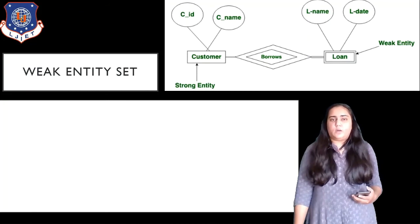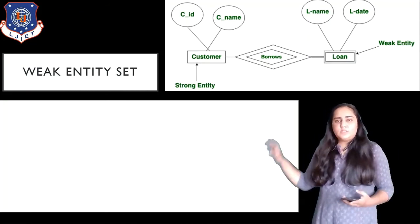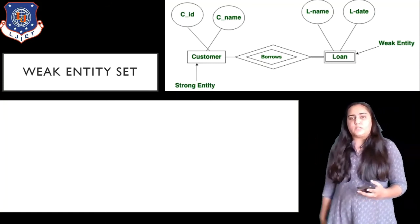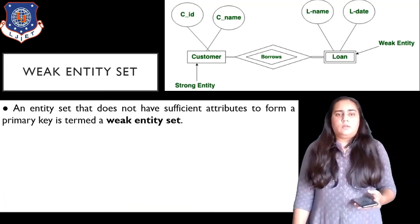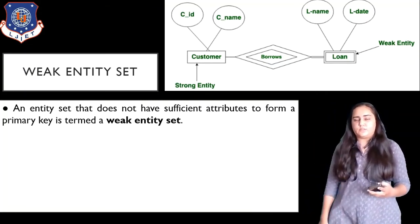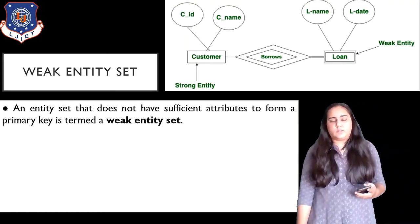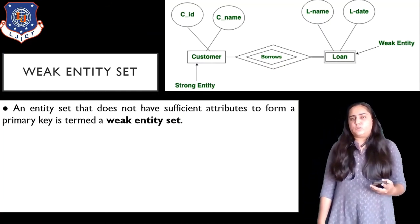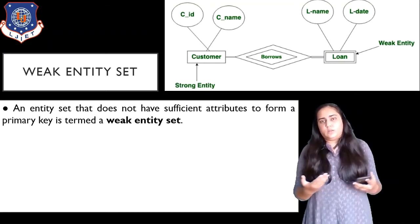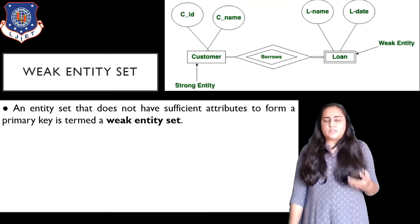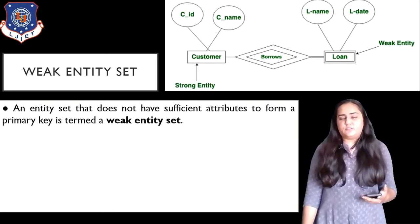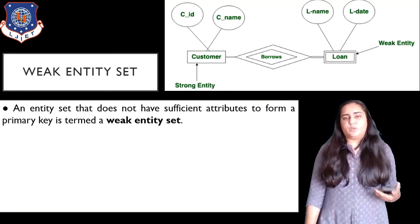Now we're going to study the concept of a weak entity set. In this diagram there are two entities: customer and loan, and loan is the weak entity set. It is shown with a double rectangle, and the relationship is shown with a double rhombus instead of a single rhombus. An entity set that does not have sufficient attributes to form a primary key is termed a weak entity set — this happens when no combination of columns forms a unique combination.